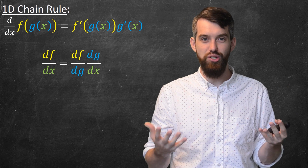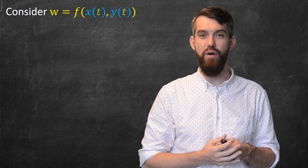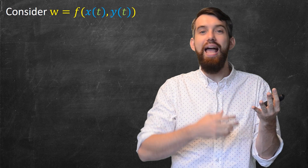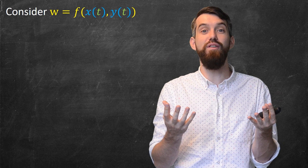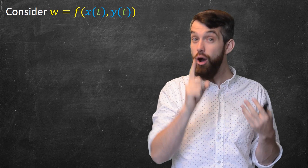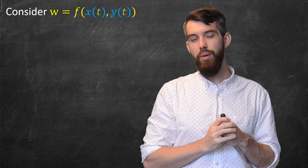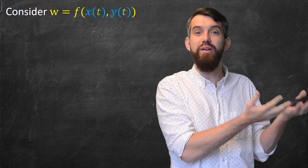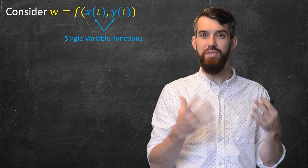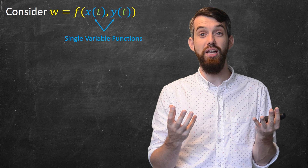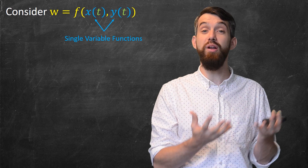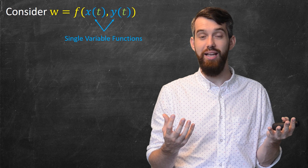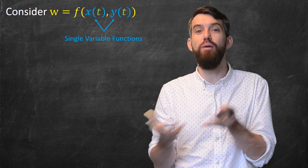To look at one of these higher dimensional situations, let's consider the following. Imagine I have a function f that depends on an x and a y — a function with two inputs x and y and a single output w. But both x and y themselves depend on some other variable t. The x of t and y of t are both single variable functions with a single input t. It's only f that is a multivariable function.